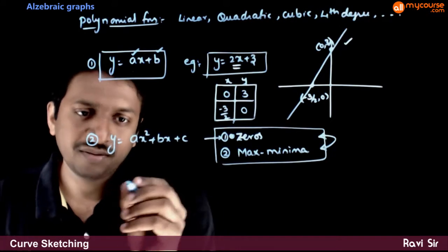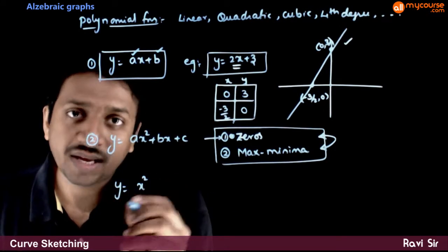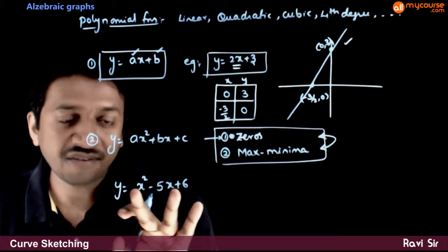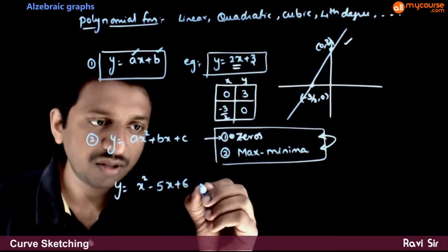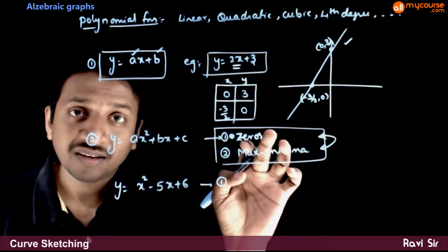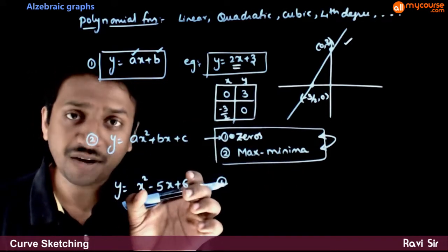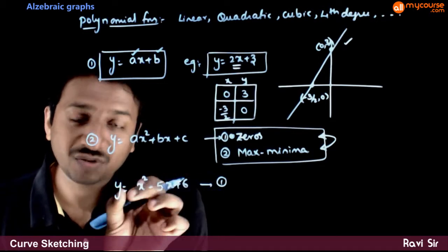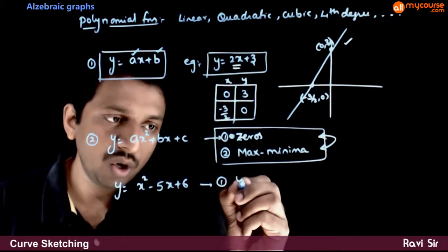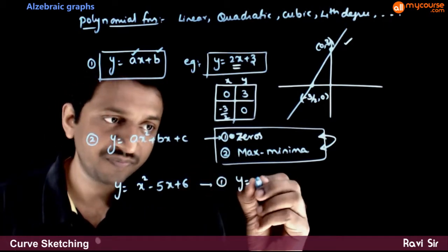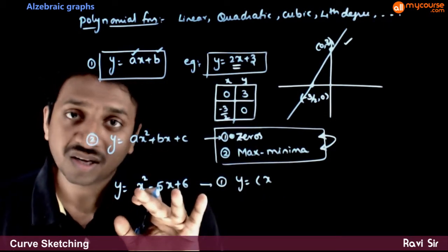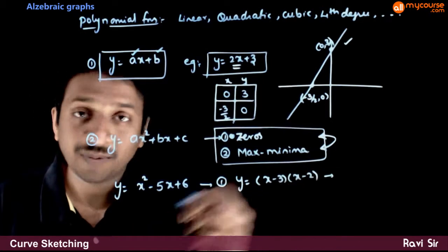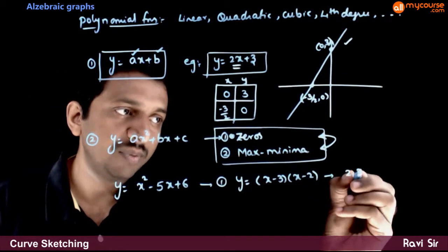So let us take an example: y is equal to x squared minus 5x plus 6. Assume that you have to draw the graph of this quadratic polynomial. The first way to analyze it is by the process of zeros — that is, we try to find the zeros of this polynomial, the values of x for which y is equal to 0. If we factorize this, the zeros can be easily found. This factors as x minus 3 into x minus 2, which means the zeros of this polynomial are 2 and 3.